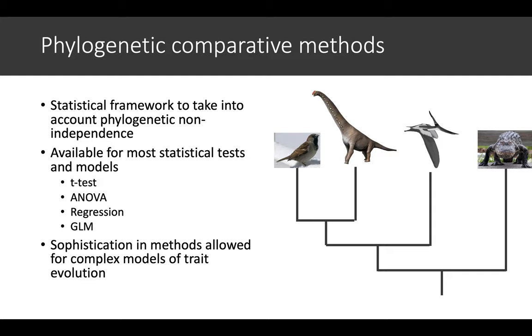Just generalized linear models, so these are kind of like extensions of regression but using different types of data, for instance. So these are available to test statistics while accounting for phylogenetic non-independence.